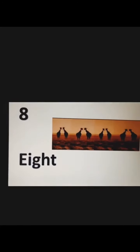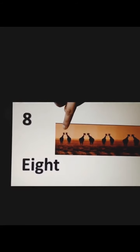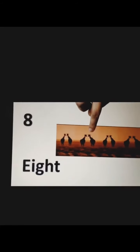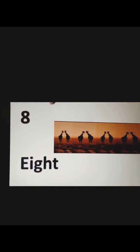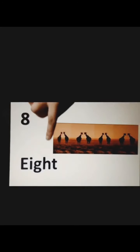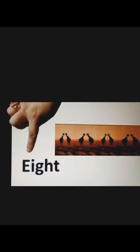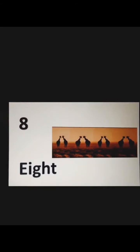Now the next number. 8. There are 8 animals out here. 1 2 3 4 5 6 7 and 8. And how do we spell 8? E I G H T 8. Once more. E I G H T 8.